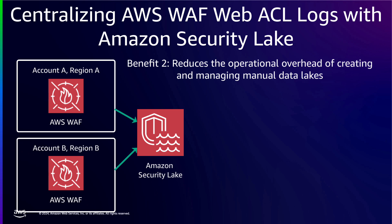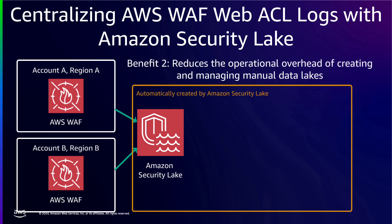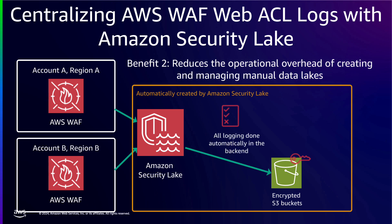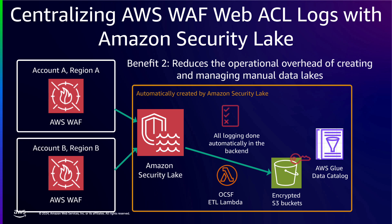It reduces the operational overhead of creating and managing manual data lakes. Amazon Security Lake automatically creates encrypted Amazon S3 buckets and the IAM permissions necessary to centralize your logs. It turns on logging in the back-end so that you no longer have to create data pipelines manually. It also deploys an AWS Lambda function to perform ETL jobs on raw WAF ACL data to the Open Cybersecurity Schema Framework, and transforms logs into Apache Parquet format. AWS Glue resources, such as AWS Glue data catalog tables and AWS Lake Formation tables, contain information about data from each source including schema, partition, and data location information.